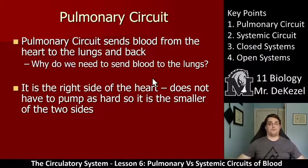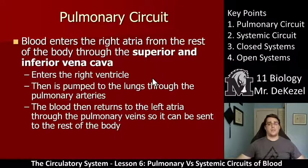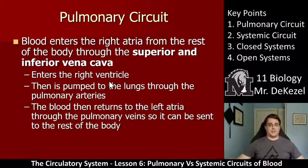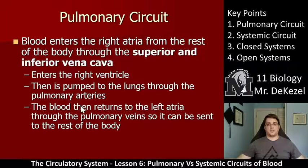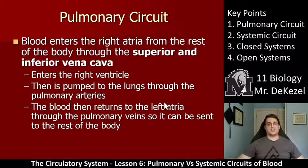It's not as far to the lungs. Blood enters the right atrium from the rest of the body through the superior and inferior vena cava, enters the right ventricle, and is then pumped to the lungs through the pulmonary arteries. The blood returns to the left atrium through the pulmonary veins so it can be sent to the rest of the body. So oxygenation is the role of the pulmonary circuit.